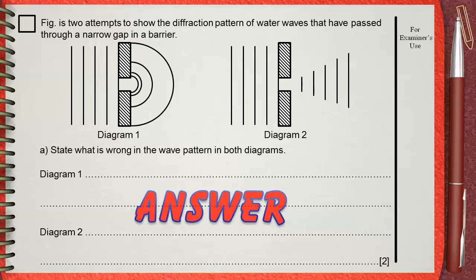When a wave passes through a gap, this is diffraction. Let's see diagram 1. Actually, diffraction does not affect wavelength, wave speed, or frequency.